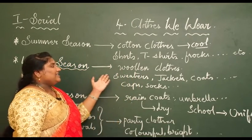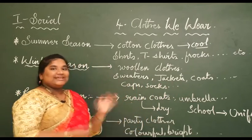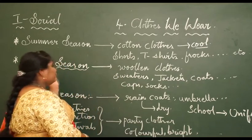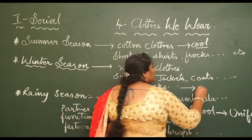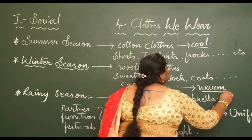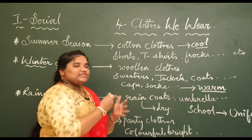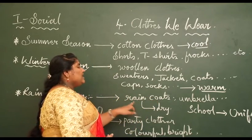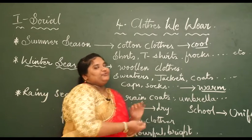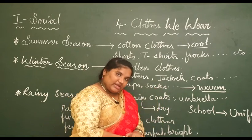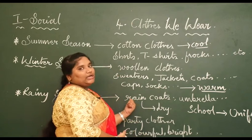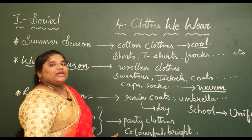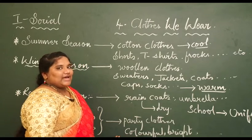Woollen clothes like sweaters, jackets, coats, caps, socks, gloves, and so on are worn in winter season. Why do we wear woollen clothes? Because they keep our body warm — as winter is very cold and we get shivers. In rainy season, when heavy rain falls, we use rain coats which keep us dry. At parties, functions, and festivals we wear colourful and bright coloured clothes to look smart and beautiful.